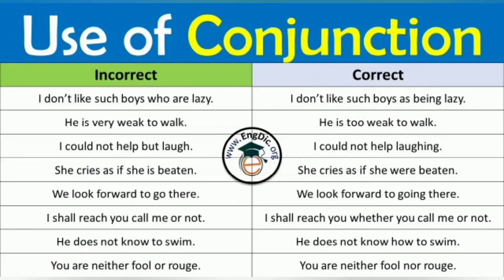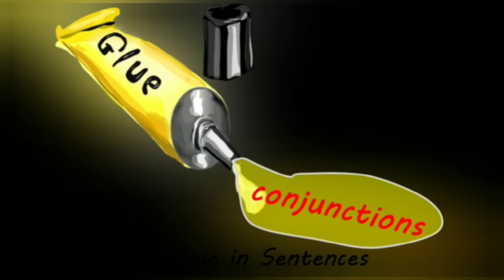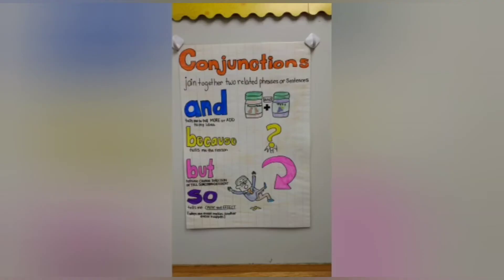Use of conjunction — some are incorrect and some are correct. You can see some here in the first passage they are wrong, and in the second one they are right. It's like glue. What this picture is showing us: conjunction is like glue. If you want to join, if you want to paste something, you have to use glue. The same way, conjunction works like that only. Some words are given here like and, because, but, so.